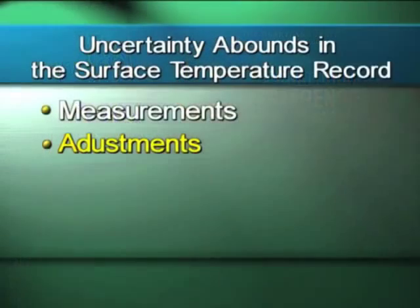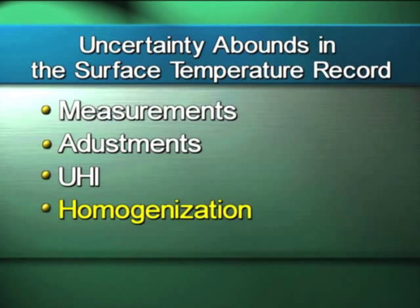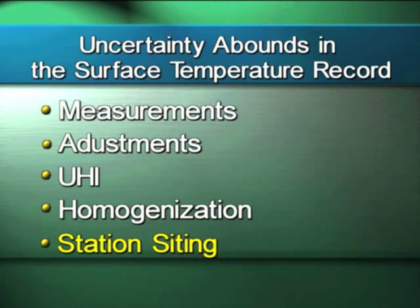Good morning, everybody. I'm going to talk about uncertainty in the surface temperature record — some of the things I've found through my investigations over the past few years. We have uncertainty in the measurements themselves done by human observers, uncertainty in the adjustments associated with the data being recorded, uncertainty associated with UHI — the urban heat island effect — and homogenization, where we're taking data from dissimilar stations and combining them together to create trends. And finally, we have station siting, which is my specialty.